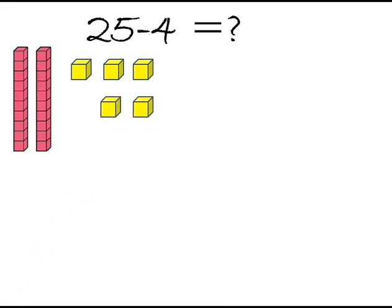Represent this into vertical form, that means tens, ones. 2 tens, 5 ones, minus 4 ones. Here we have to subtract 4 ones from 5 ones. So take away 4 ones blocks.